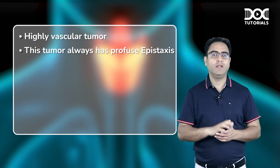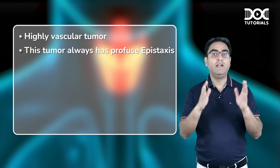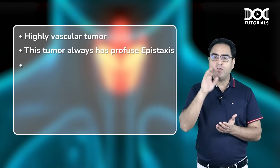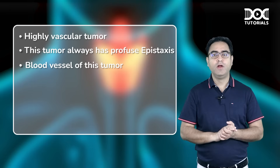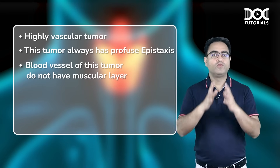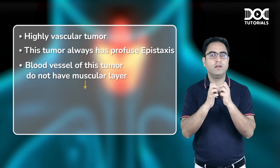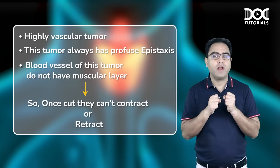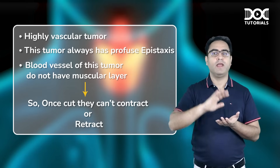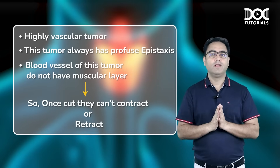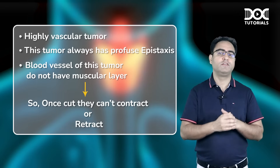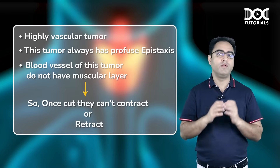A famous exam question: why does angiofibroma bleed so much? The reason is that the blood vessels making up this tumor do not have a muscular layer. So once cut, they cannot contract or retract, and they keep bleeding for a very long time. Therefore, angiofibroma always has recurrent profuse epistaxis in the exam history.